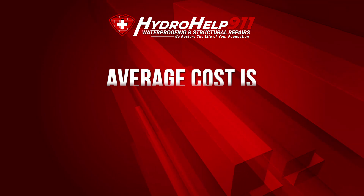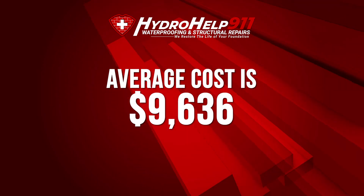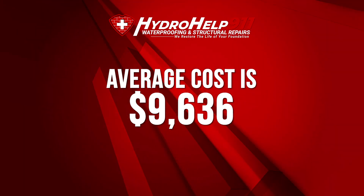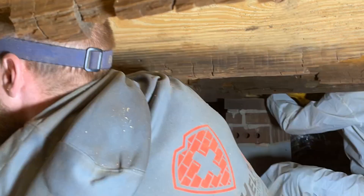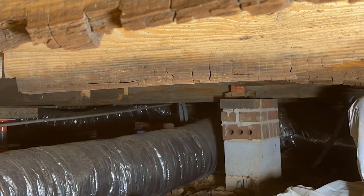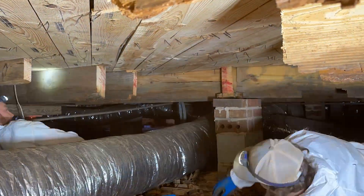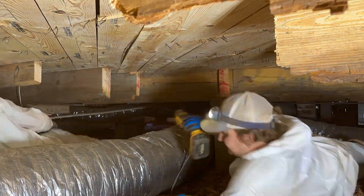As you can see, the cost of crawlspace wood rot repair can vary greatly depending on a number of factors. While we have completed jobs that range from $800 to $101,000, the average cost for us to fix it properly is $9,636. We hope this video has given you a better idea of what you can expect when it comes to the cost of repairing wood rot in your crawlspace.